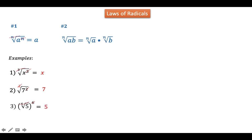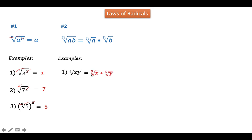For the Law of Radicals #2, the nth root of a times b is equal to the nth root of a times the nth root of b. We simply distribute the index to each of the radicands. For example, the 5th root of x times y can be written as the 5th root of x times the 5th root of y. Given the cube root of 2x, this can be written as the cube root of 2 times the cube root of x.